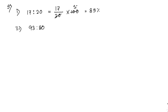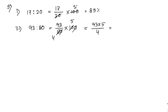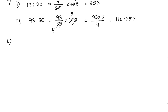The third one: 93 is to 80, written as 93 by 80 into 100. Simplifying: 100 and 80 cancel to give 5 by 4, so 93 into 5 divided by 4 equals 465 by 4, giving a final answer of 116.25 percent.